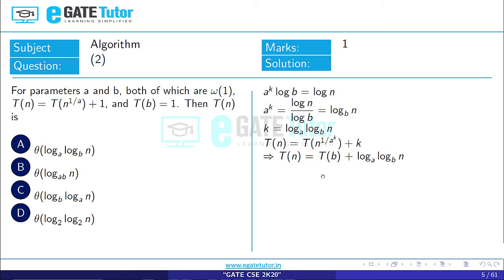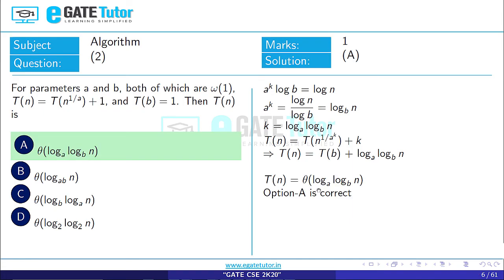We know that T(b) is 1, so T(n) is equal to theta of log_a(log_b(n)). Hence, option A is correct.